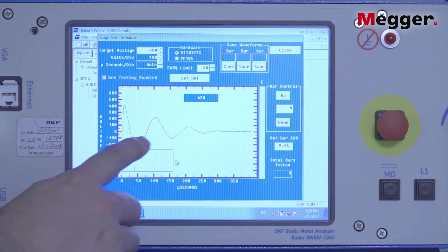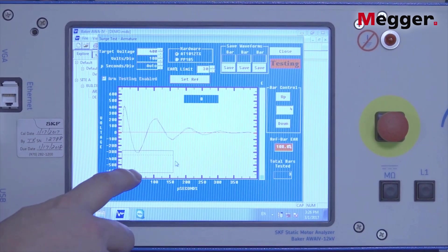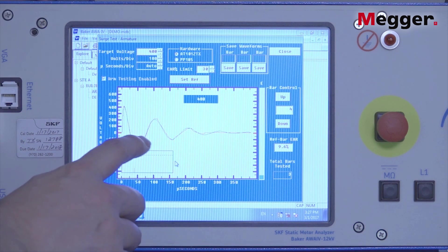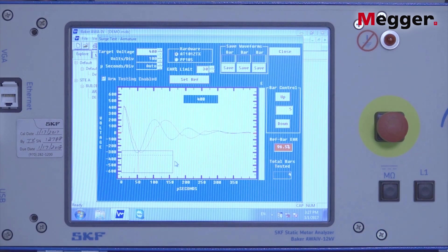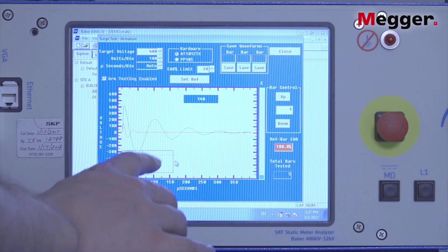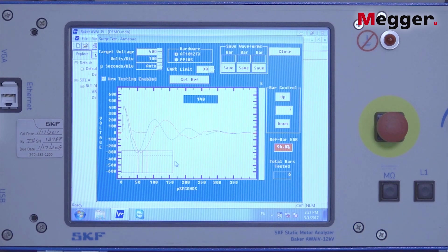In the lower left hand corner, we have the pulse to pulse AR graph that's indicating the difference in pattern from one bar test to the next bar test. Here we can see the variation in the AR that's occurring.